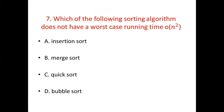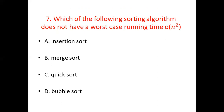Seventh bit: Which of the following sorting algorithms does not have a worst-case running time of order n squared? Option A, Insertion sort. Option B, Merge sort. Option C, Quick sort. Option D, Bubble sort. The answer is Option B, Merge sort.